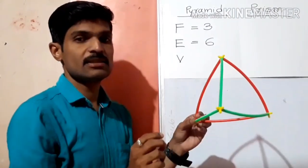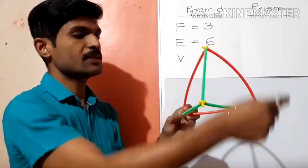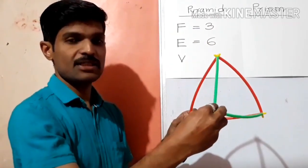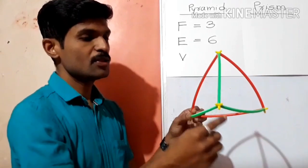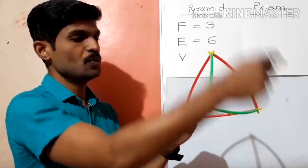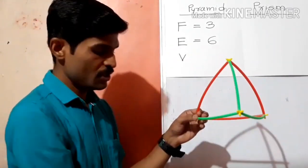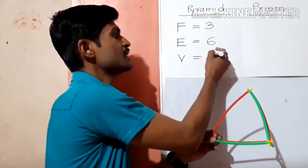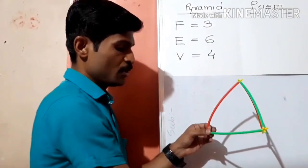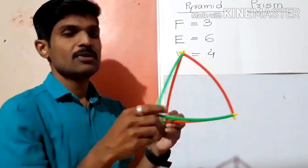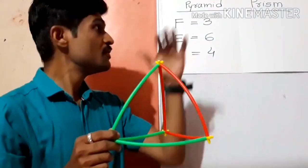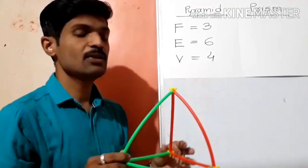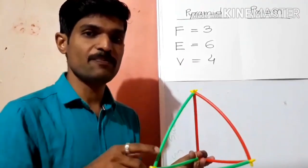Now vertices — all the corners where edges meet each other. Let's count: one, two, three, four — so four vertices. We can measure faces, edges and vertices for all three dimensional shapes.